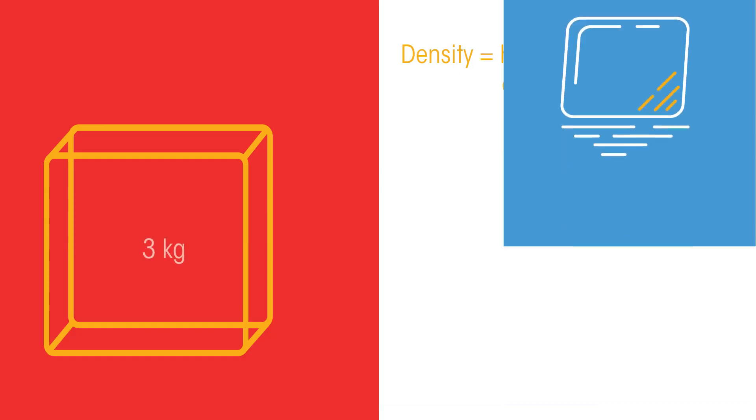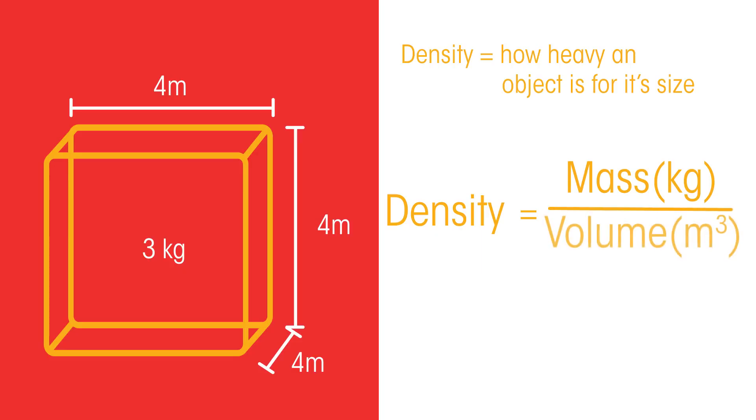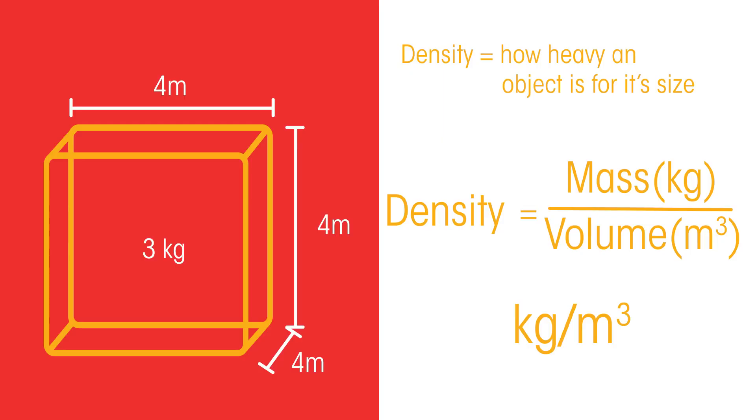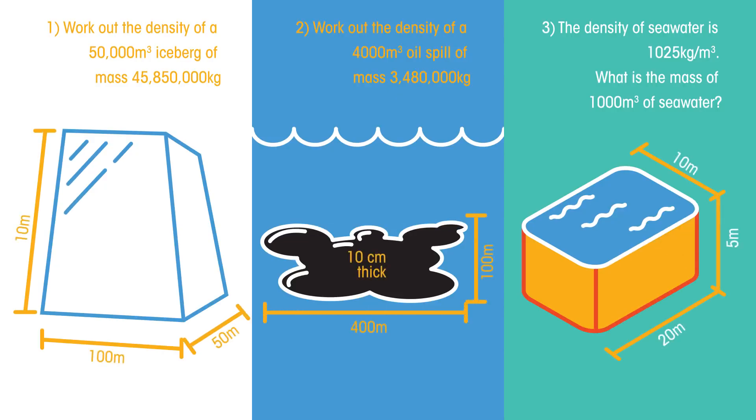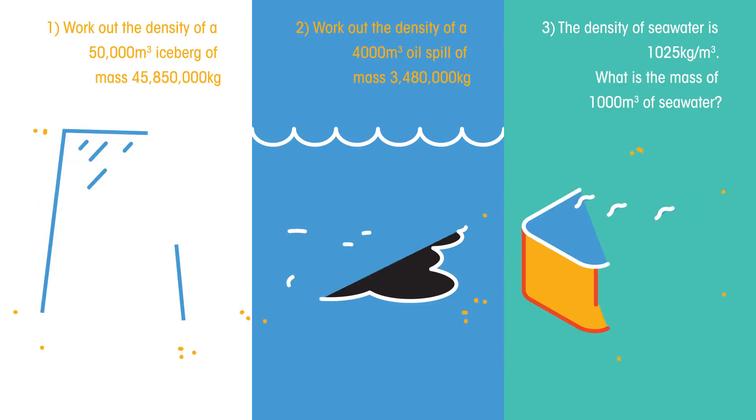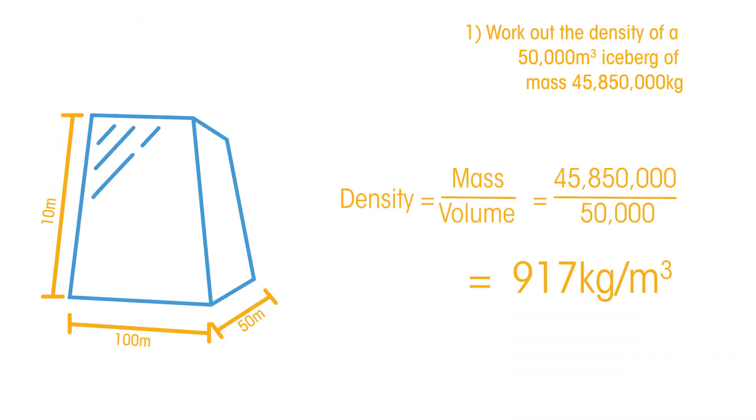Density is how heavy an object is for its size. To calculate the density of an object, divide its mass in kilograms by its volume in cubic meters. These are the units used for density. Using this formula, give these density questions a go. Notice that question 3 is a little different. How did you get on?